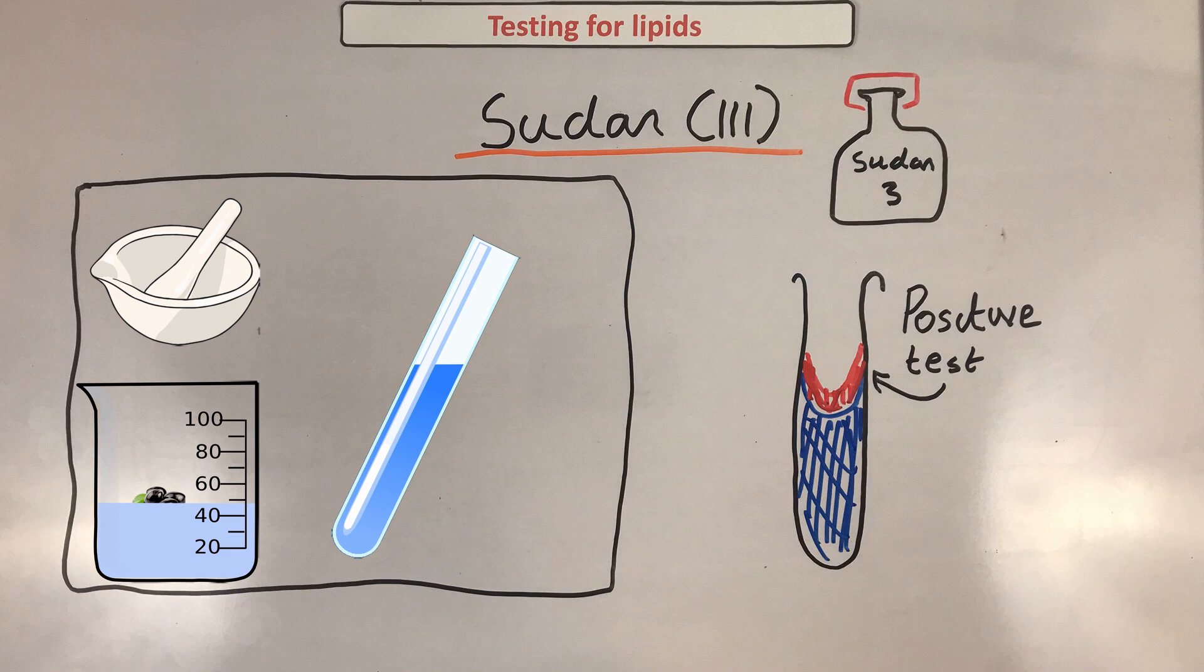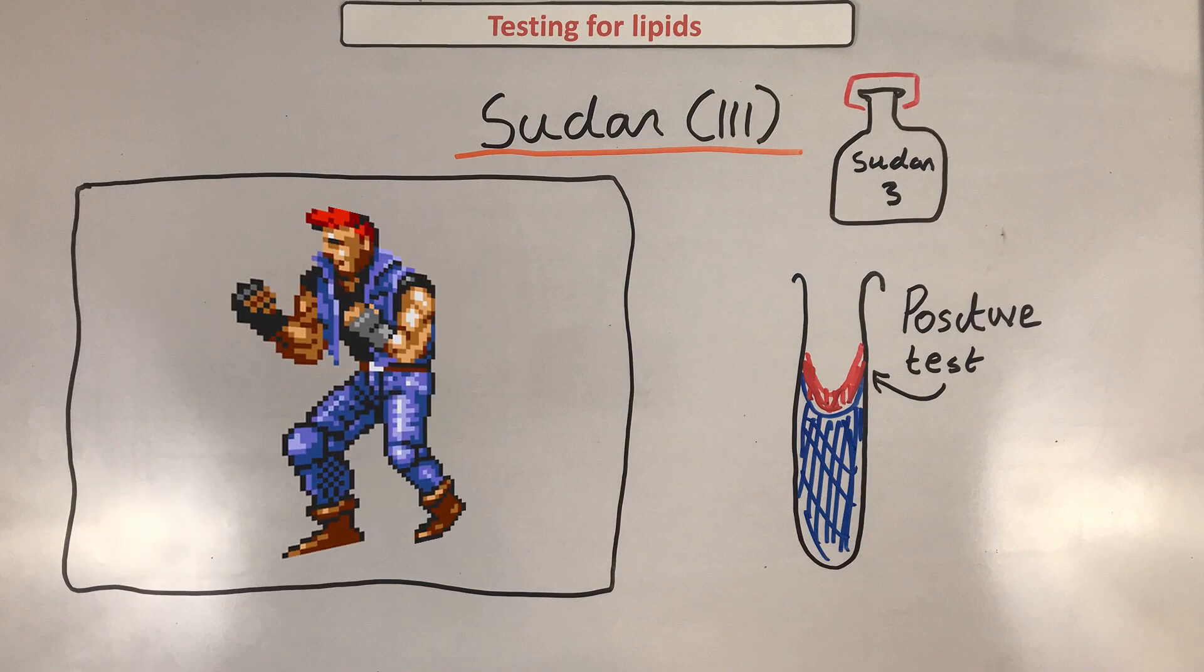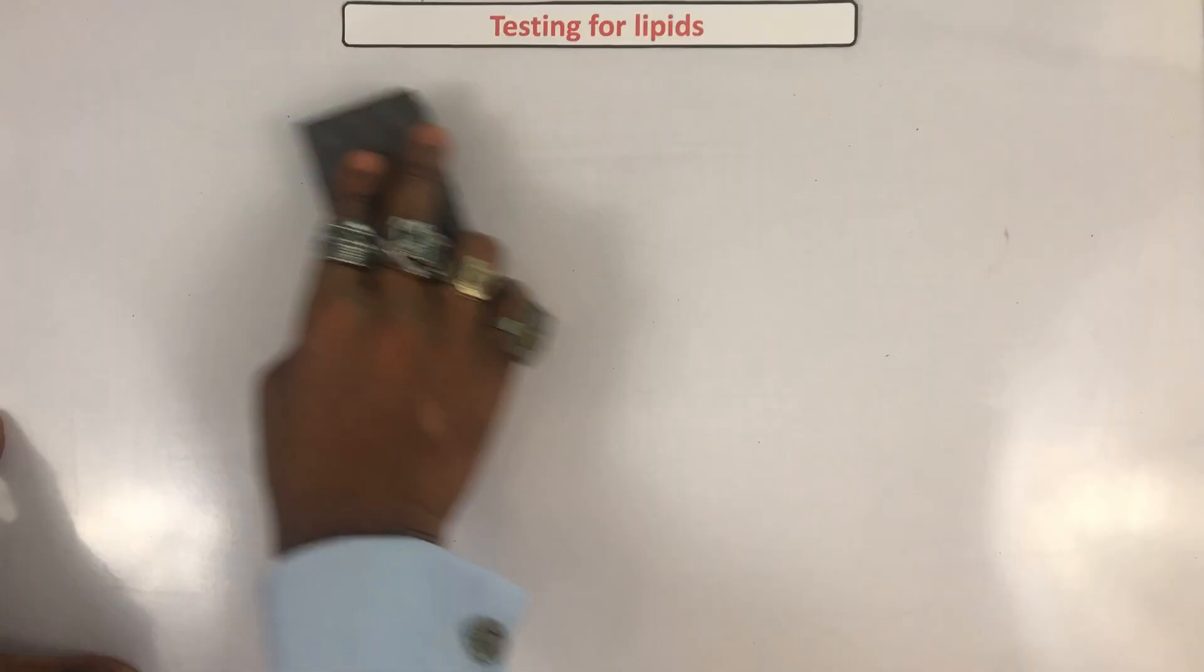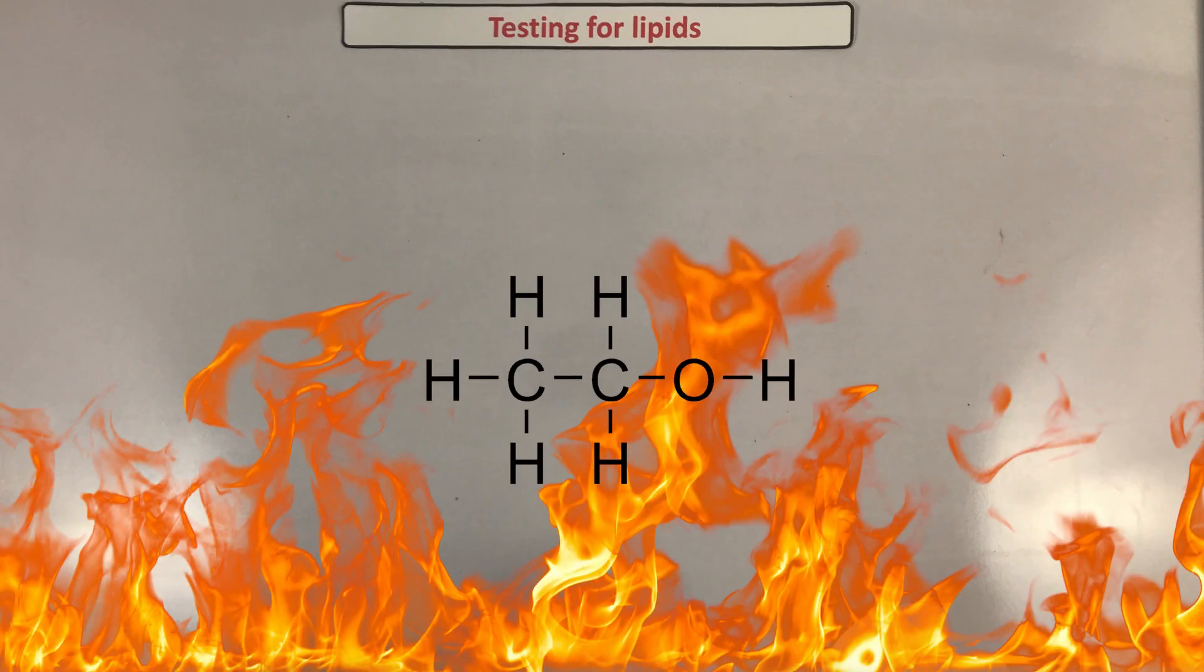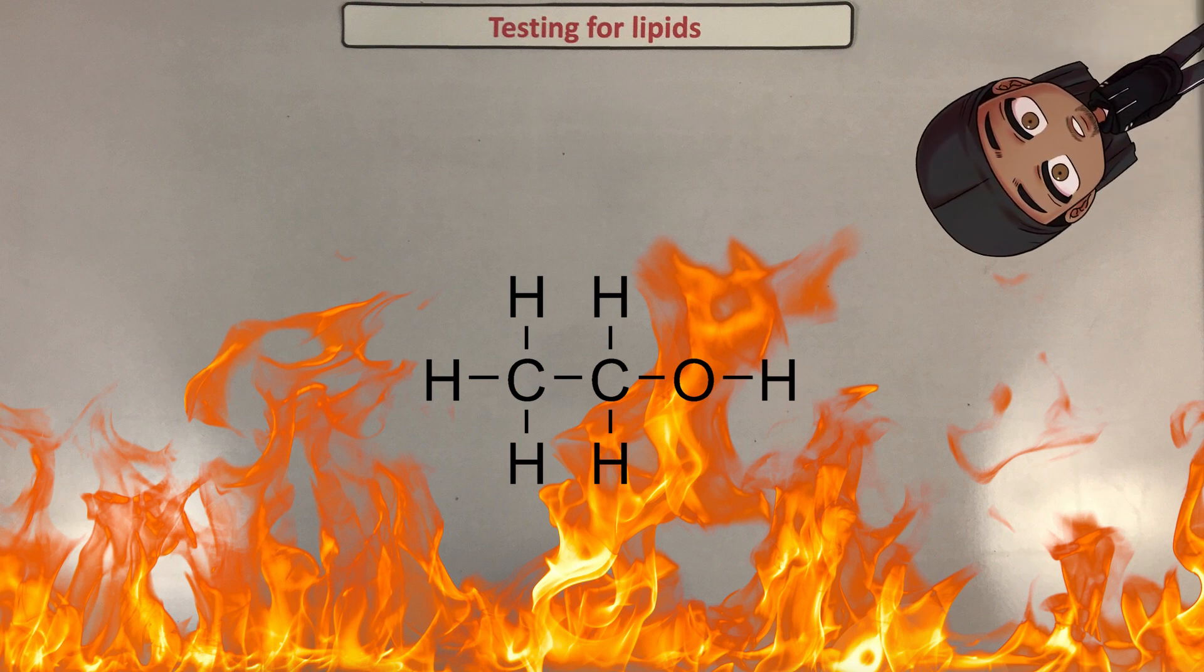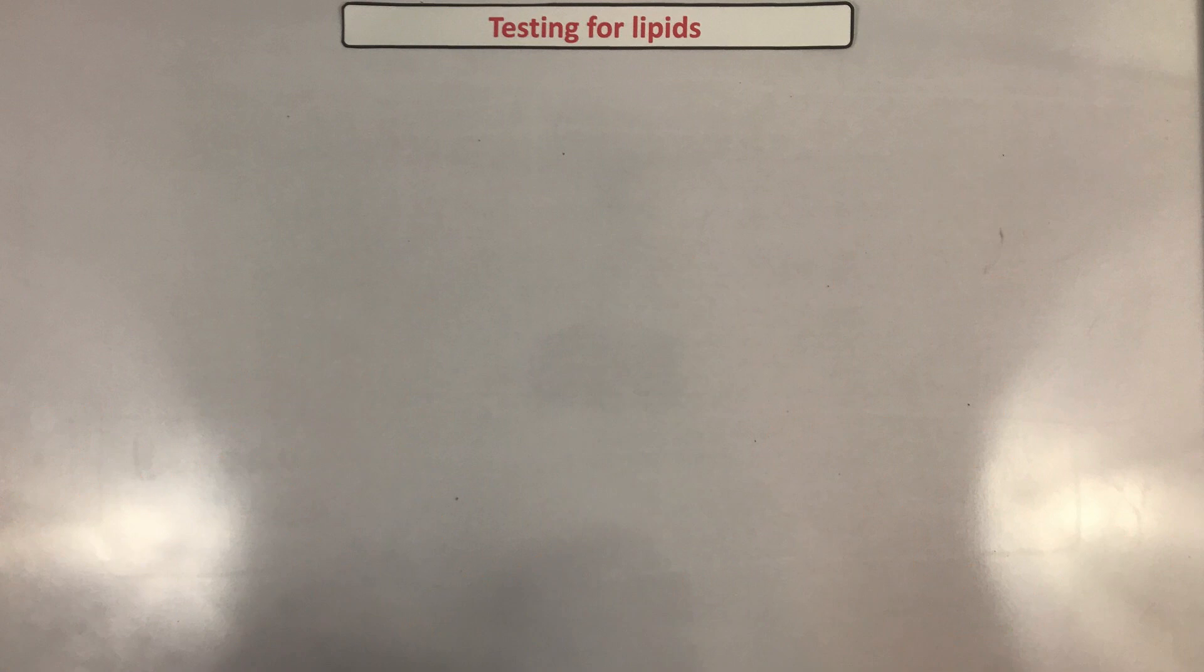Some safety precautions for this experiment: you're using ethanol which is highly flammable, so make sure that there aren't any naked flames around. Uncle, did you just say naked? Yes, naked as in something that isn't covered - so a flame that's not covered. Anyway, make sure you have your safety goggles on.